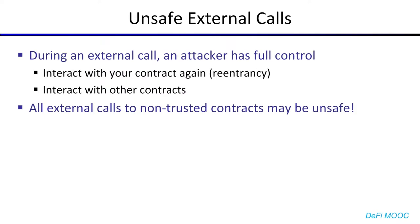The reason that unsafe external calls are so unsafe is because during an external call, the attacker has full control over the control flow. What they can do is modify the global Ethereum state however they like, possibly in a way you didn't anticipate. One example would be to interact with your contract again — this is commonly known as reentrancy — or to interact with other contracts that you interact with. This is something that's often not considered. Basically, any external call to non-trusted contracts may be unsafe unless you can verify that either the contract itself is trusted or the external call is safe.